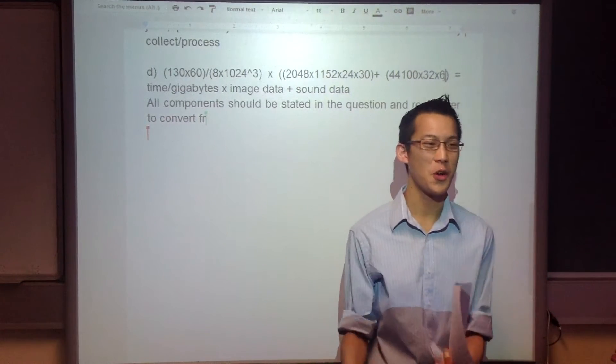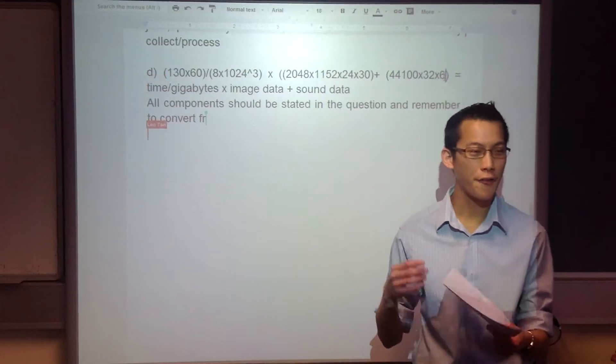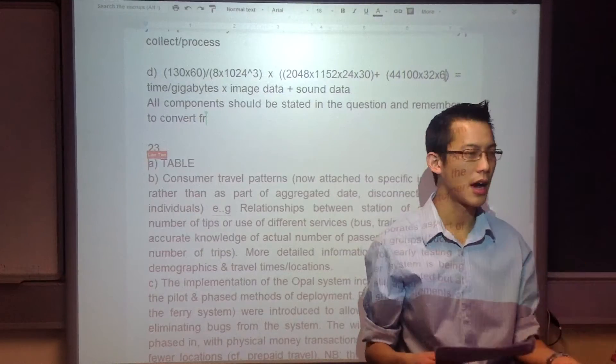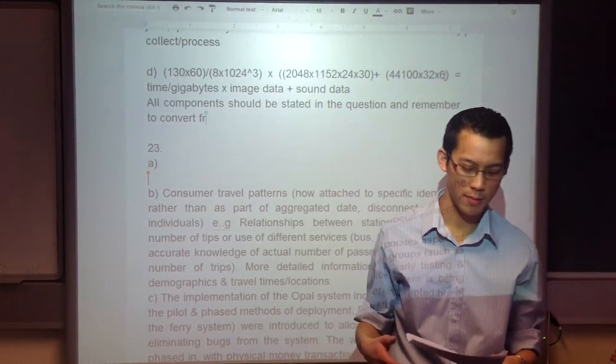Now, firstly, some of you did not know what a data dictionary was. So I'm looking for four main headings in a data dictionary. You should have had a field, data type, size, description. Some of you included the example, that's fine, but it wasn't the most important part.